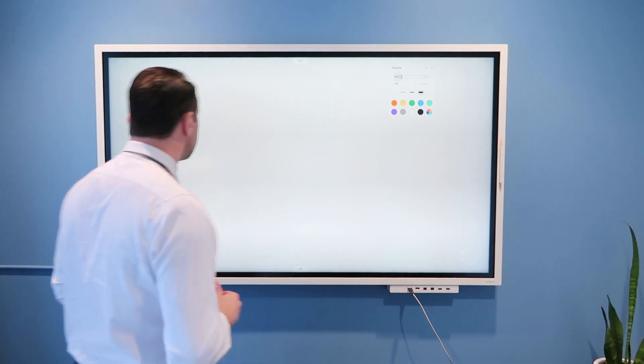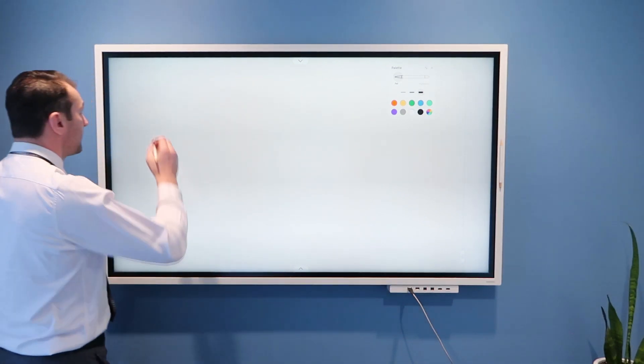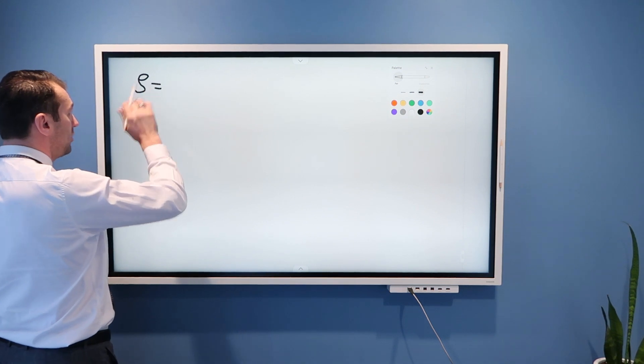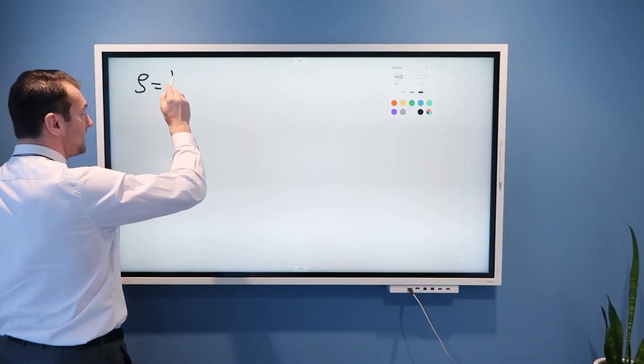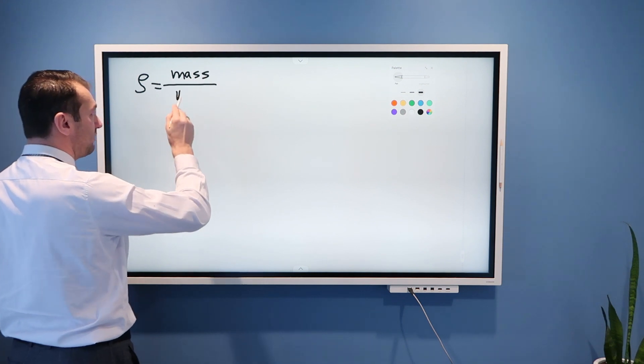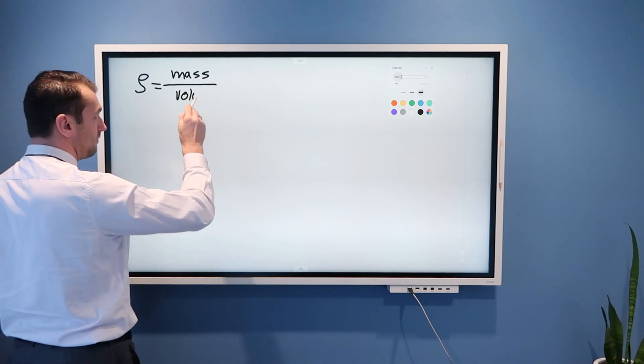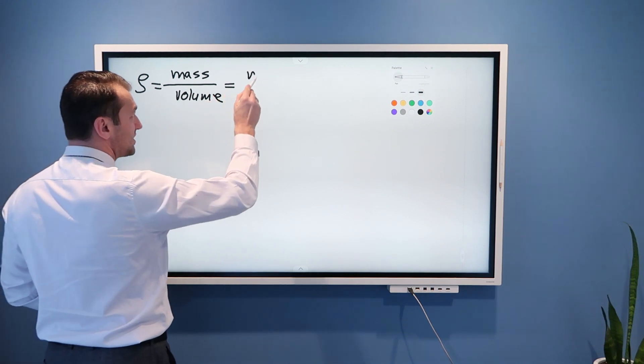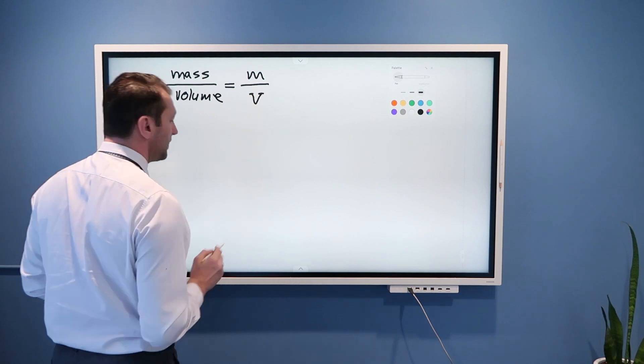Let us first start with air density. Density of anything is usually denoted with small Greek rho and it represents mass of some substance divided by the volume. Or we usually say mass is m, volume is capital V.